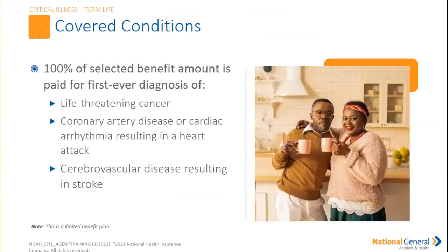For covered conditions, 100% of the selected benefit amount is paid for the first ever diagnosis of life-threatening cancer, coronary artery disease or cardiac arrhythmia resulting in a heart attack, or cerebral disease resulting in a stroke. If someone has had a prior cancer diagnosis, heart attack, or stroke, they've already been diagnosed — so you may want to consider a different type of policy, because again, it's first time ever.